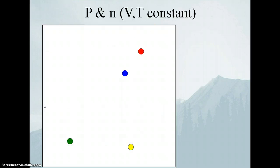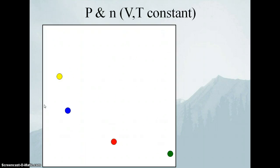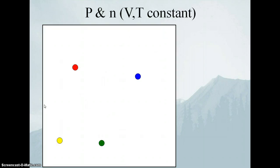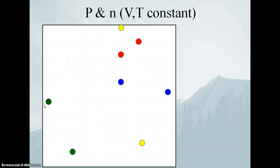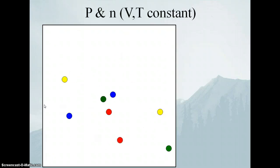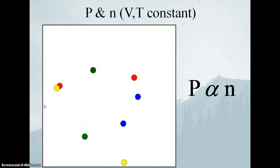Next, we look at the relationship between pressure and the number of moles. We keep the volume and temperature constant, so the velocity of individual molecules is constant. If we double the number of moles of gas, they're all moving the same speed as before, but now we have twice as many molecules banging around. The pressure doubles because we have twice as many collisions per unit time. So pressure is directly proportional to the number of moles.